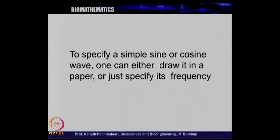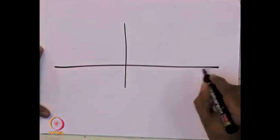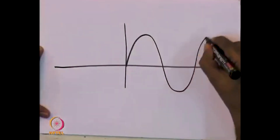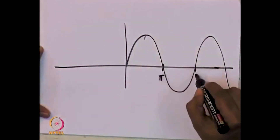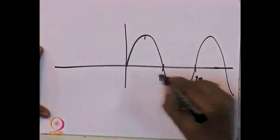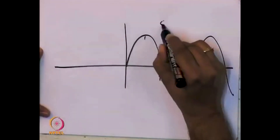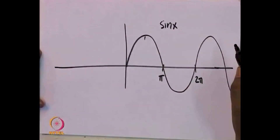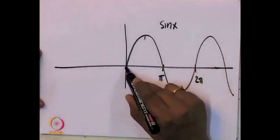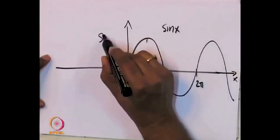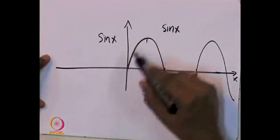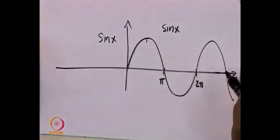If I want to tell you about sine x or sine 2x or sine 3x, I just draw this. Sine 0 is 0, so I draw like this. This is pi/2, this is pi, and this is 2 pi. So this is basically sine x. It completes a cycle in 2 pi — when x is equal to 2 pi it comes back to a complete cycle. So this is essentially sine x.